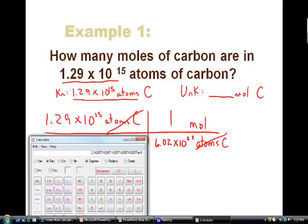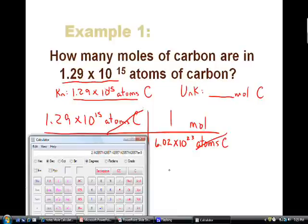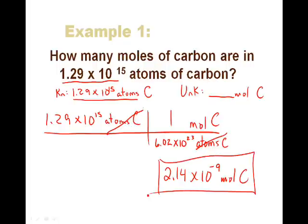So our answer here to 3 sig figs is going to be 2.14 times 10 to the negative 9. 2.14 times 10 to the negative 9. And the unit that's left is moles. And actually, I didn't write it there - that's moles of carbon. And that's how we solve that kind of problem.